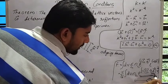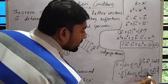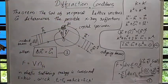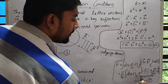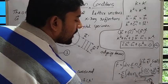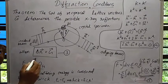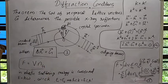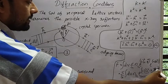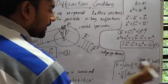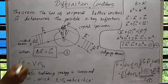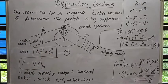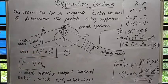When the value of the scattering vector Δk equals the value of the reciprocal lattice vector G, the term (G − Δk) vanishes and e^(i·0) = 1. So we get the maximum amplitude F = V·n_G when Δk = G. This is the diffraction condition — this is one way of writing the diffraction condition.